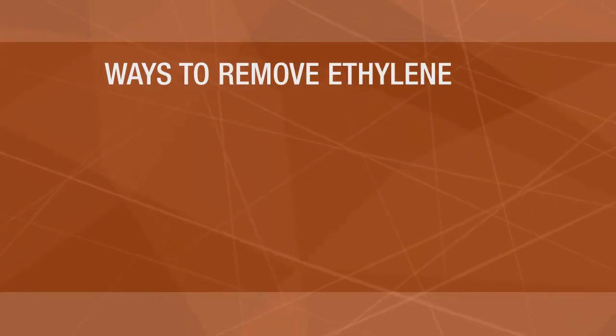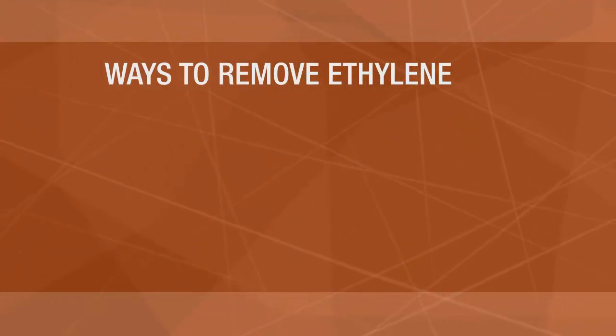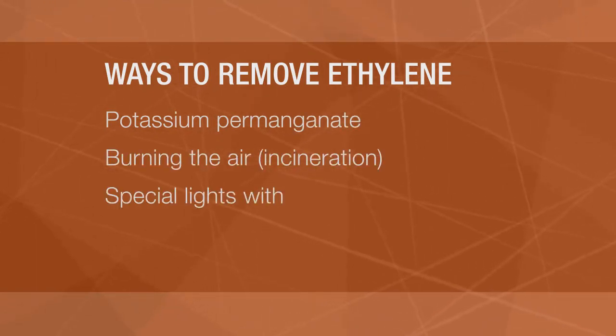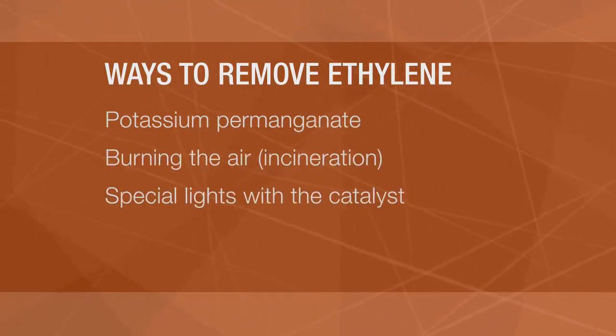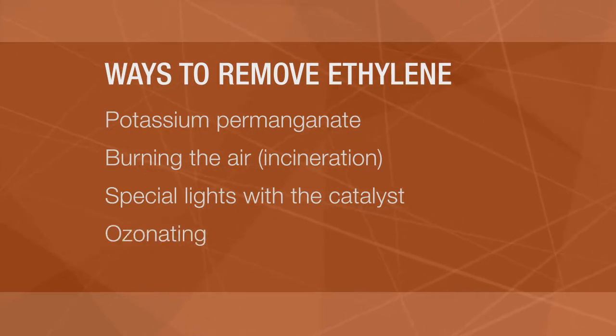There have been a number of ways to remove this ethylene gas, such as using potassium permanganate pellets, burning the air, using special lights in combination with a catalyst, or even ozonating the entire storage facility. While each of the solutions mentioned definitely work, at least to some extent, let's briefly review them one by one so we might better appreciate how the BioTurbo stacks up against these other methods.